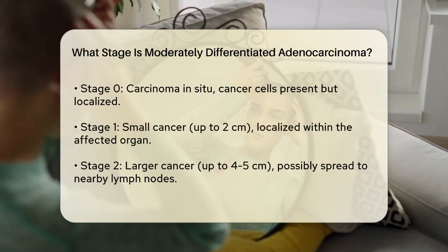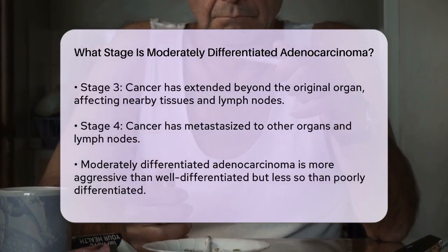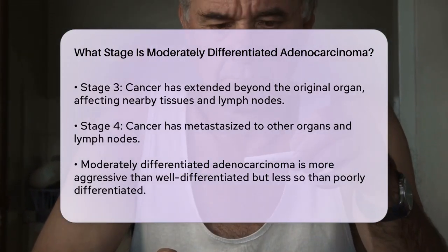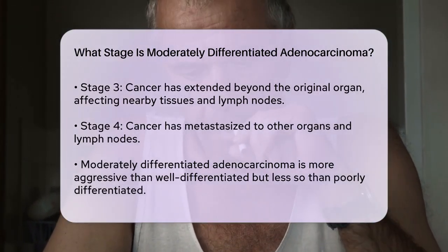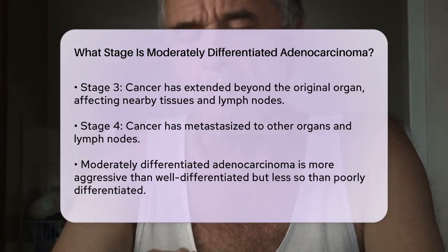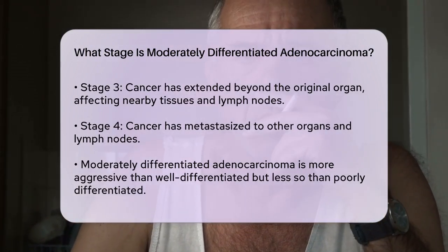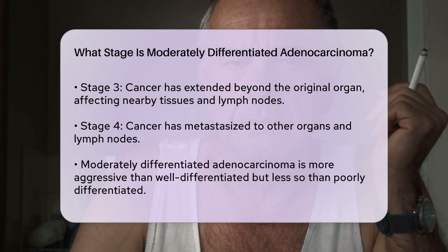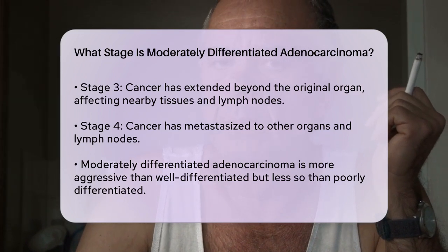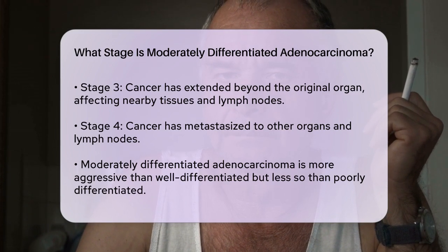Now let's get back to moderately differentiated adenocarcinoma. This type of cancer is more aggressive than well differentiated adenocarcinoma, but less aggressive than poorly differentiated adenocarcinoma. However, the stage of the cancer is not determined solely by the differentiation of the cells. The stage of moderately differentiated adenocarcinoma can vary.